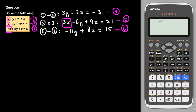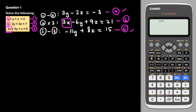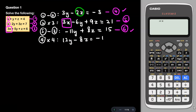Now looking at equation 4 (3y − 2z = −3) and equation 6 (−11y + 8z = 15), I want to eliminate z. To make the z coefficient of equation 4 equal to 8z, I multiply equation 4 by 4, giving 12y − 8z = −12, which I label as equation 7. Now I can eliminate z by adding equation 6 and equation 7.